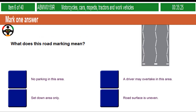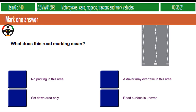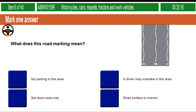What does this road marking mean? No parking in this area. A driver may overtake in this area. Set down area only. Road surface is uneven.